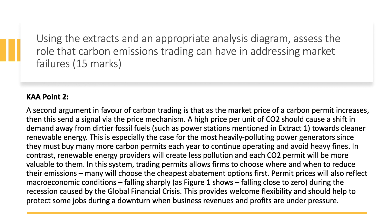Permit prices will also reflect macro conditions, falling sharply — as Figure 1 shows — close to zero in 2009. This provides welcome flexibility and should help to protect some jobs, particularly during a recession when revenues and profits are under pressure. So carbon permits are more valuable to the most pollution-efficient firms, firms have flexibility about when they cut their emissions, and the price reflects the economy — making it a flexible price instrument as a way of trying to address market failures.